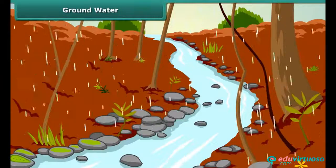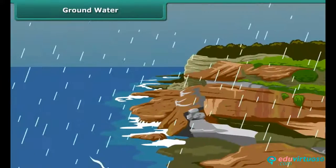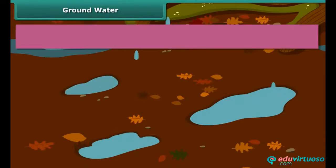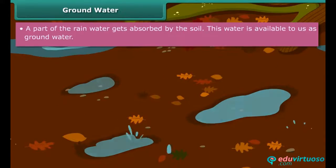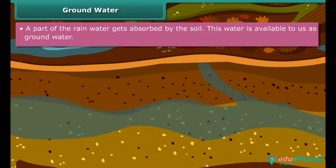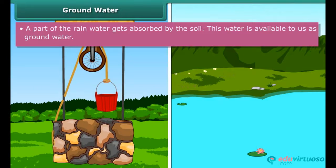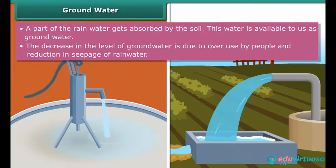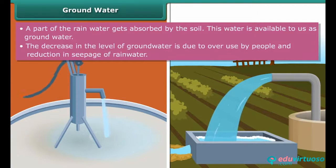Not all rainwater flows into rivers and ultimately into oceans — some of it is absorbed by the soil. This water is known as groundwater. Groundwater is the source of water for many lakes and wells. Hand pumps and tube wells tap this source to provide water for consumption.